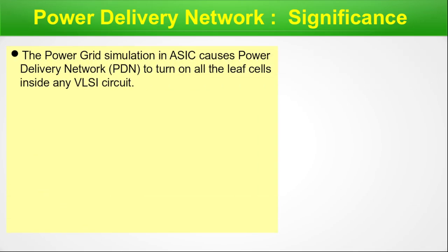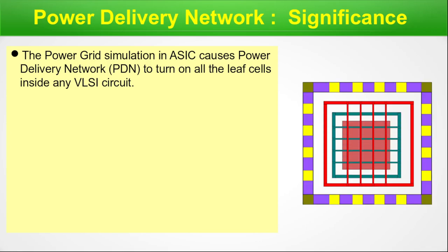Power grid simulation in ASIC causes the power delivery network, abbreviated as PDN, to turn on all the leaf cells inside any VLSI circuit. Here is a short diagram of the power delivery network which is easy to understand. Let me point out the parts and components of this power delivery network.